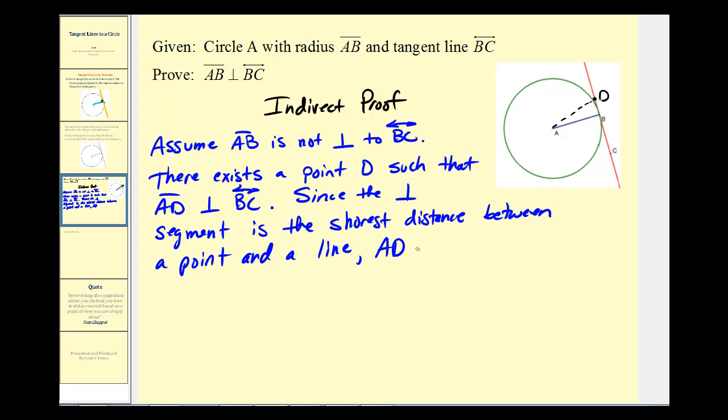the length of AD would have to be less than the length of AB. This would have to be true if we're assuming that segment AD is perpendicular to the tangent line BC.